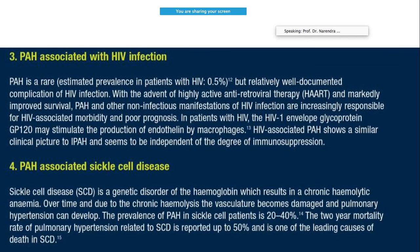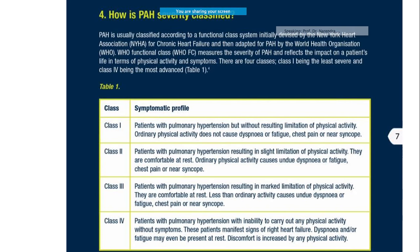The most common type encountered in congenital heart disease patients is Eisenmenger syndrome, where blood starts flowing due to pressure differences. Newer infections like HIV are also associated with PAH, although the incidence is not so common, and it has been shown to be irrelevant to immunosuppression. Sickle cell disease, a genetic disorder of hemoglobin, can also cause PAH with an incidence of up to almost 50%.